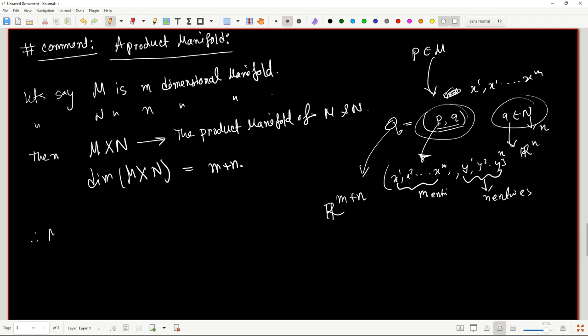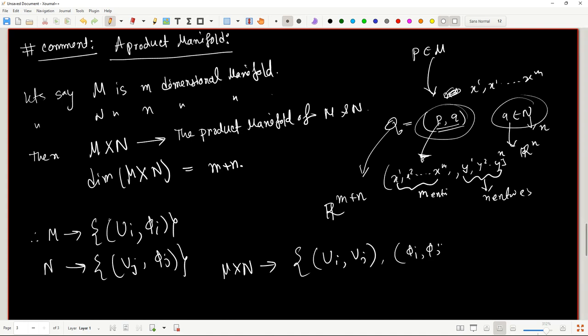And you can also show that if your manifold M has some atlas ui, phi i, and N is endowed with the atlas vj, phi j, then the product manifold M cross N will have an atlas of ui cross vj, phi i cross phi j. This is the atlas of that manifold. And anyone can show that if you define a Cartesian product like this, all the axioms are satisfied as well.